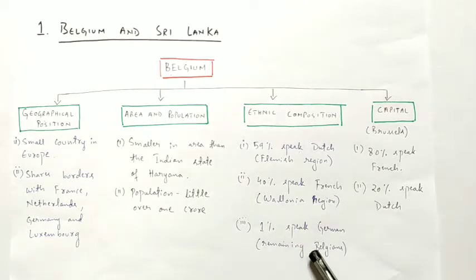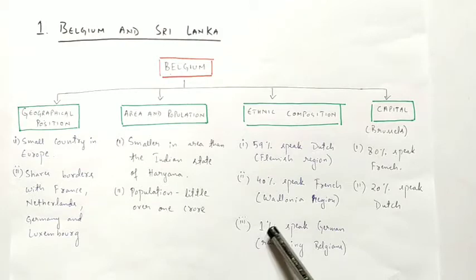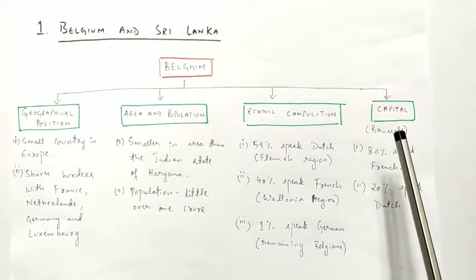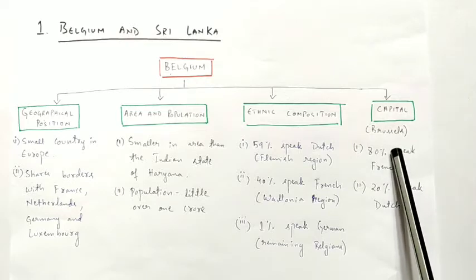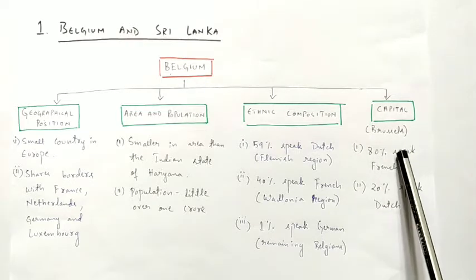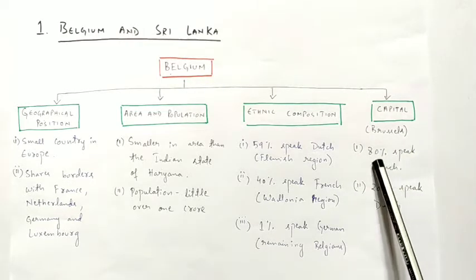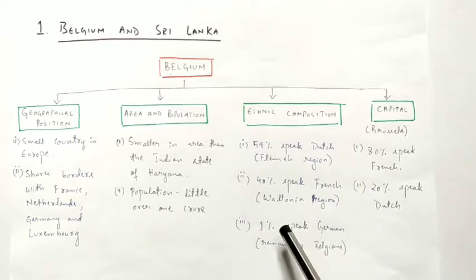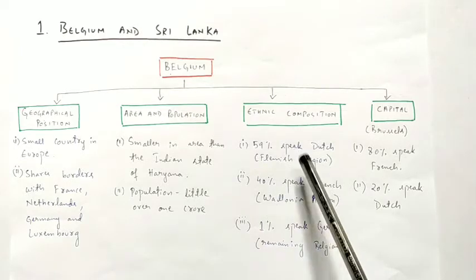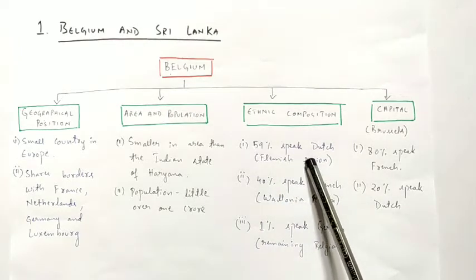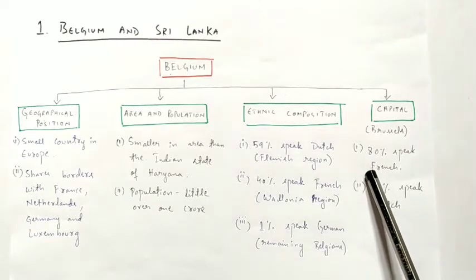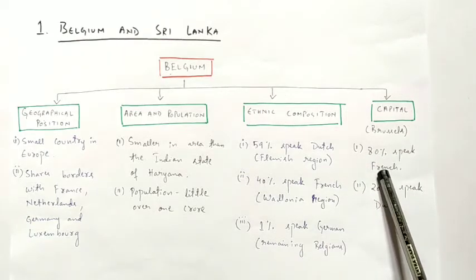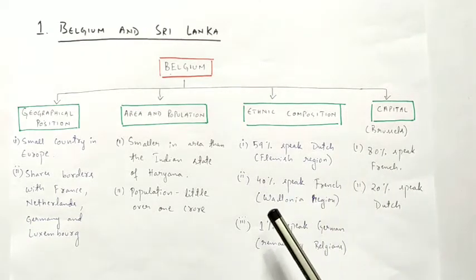40 percent speak French, from the Wallonia region, and the remaining one percent of Belgians speak German. Brussels is the capital of Belgium. In Brussels, 80 percent of the population speaks French and 20 percent speak Dutch. So which language is in majority overall? Dutch speaking people — but in the capital, French speaking people are in majority.